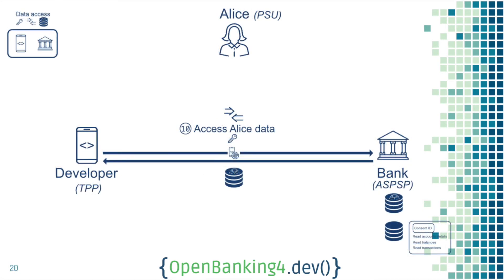Now that you have the key, the easy part is doing a request using that key as a bearer token and getting Alice's data. The bank, through the access token, does all the verifications it needs — reading the consent ID, making sure it's been approved, and returning exactly the data that Alice consented to share.